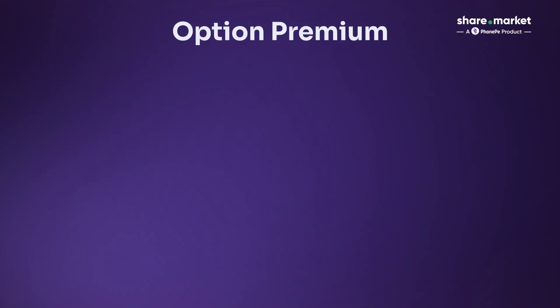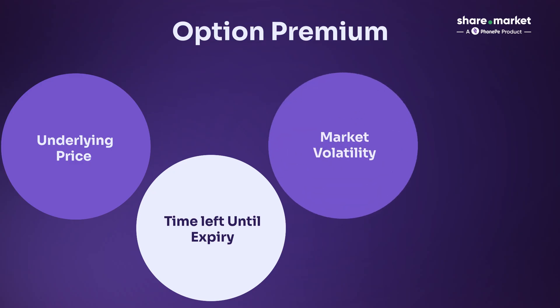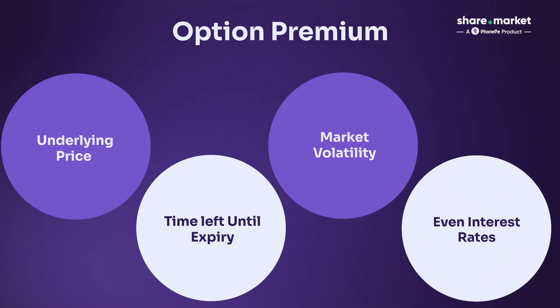Unlike equities, options don't move point to point. Sometimes the price rises faster than you expect, and other times it falls sharply even though the market barely moved. So why does this happen? Option premiums are influenced by multiple factors, not just price. They react to the underlying price, the time left until expiry, market volatility, and even interest rates. And this is exactly where the Option Greeks come in.